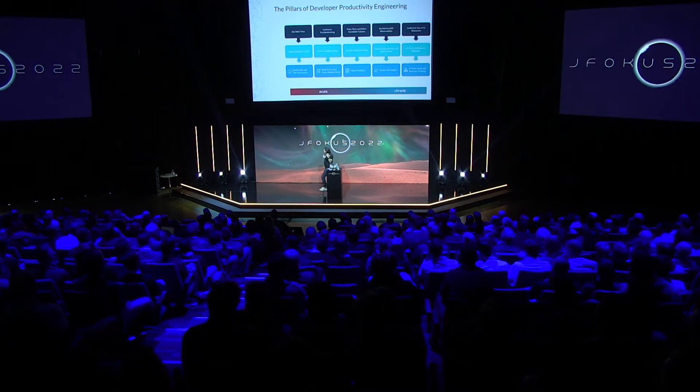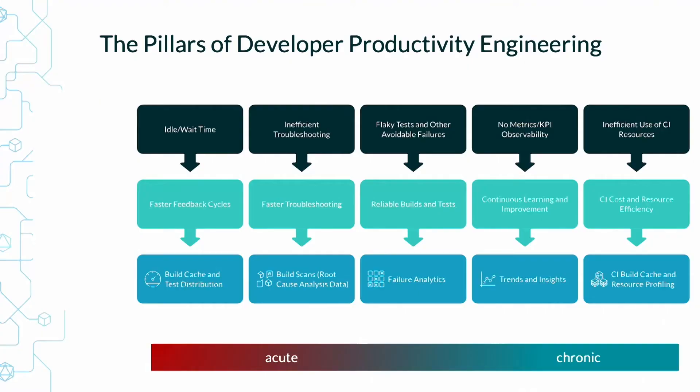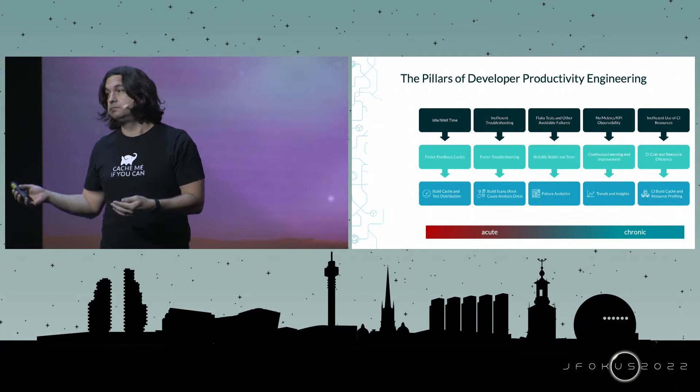The last pillar is worth mentioning — many of these technologies are basically just work avoidance. If you look at caching and predictive test selection, it stands to reason that if you're replicating a lot of your work in CI or in some metered cloud environment, those processes will also be doing less work. So you'll save money on your CI costs.